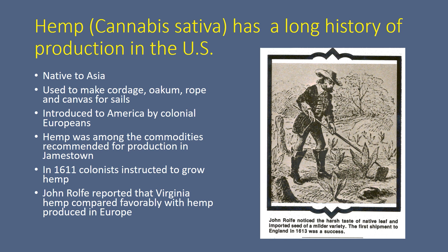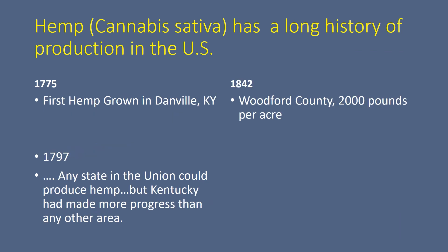They wanted to grow it for what they needed here in the new colonies, but they also were required in some cases to send it back to England. John Roth reported that the Virginia hemp compared very favorably to what was grown in Europe at the time.